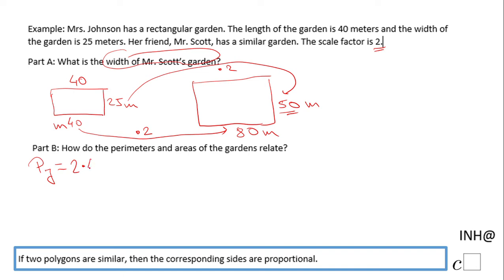So 2 times 40 and 2 times 25. That will give us 80 plus 50, which is 130 meters. That is the perimeter of Miss Johnson's garden.